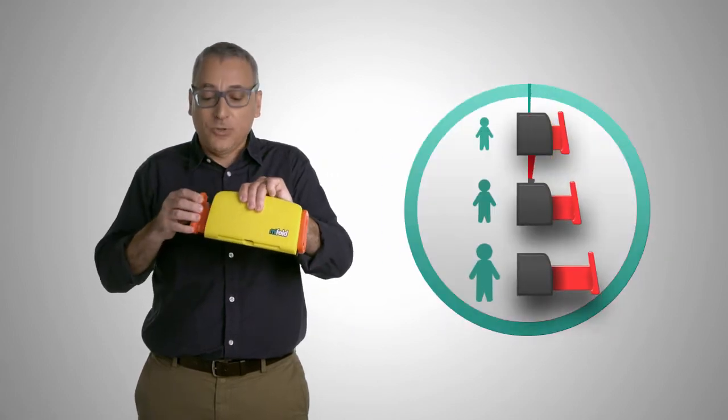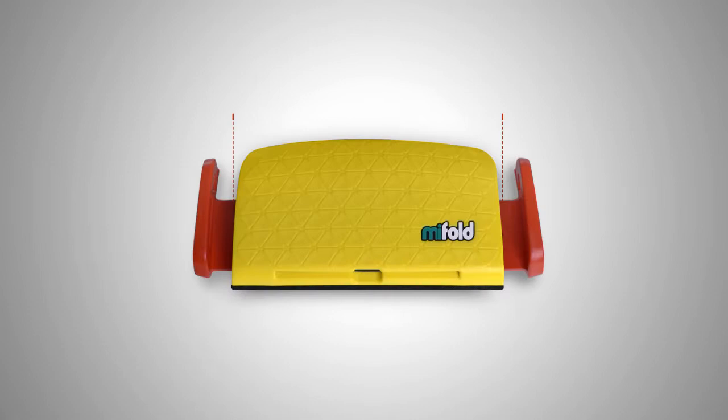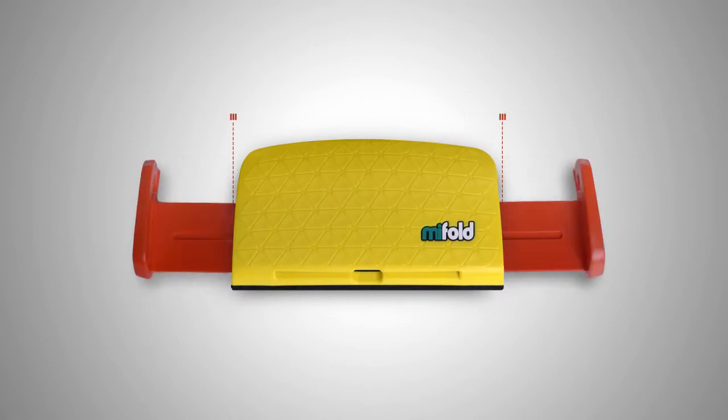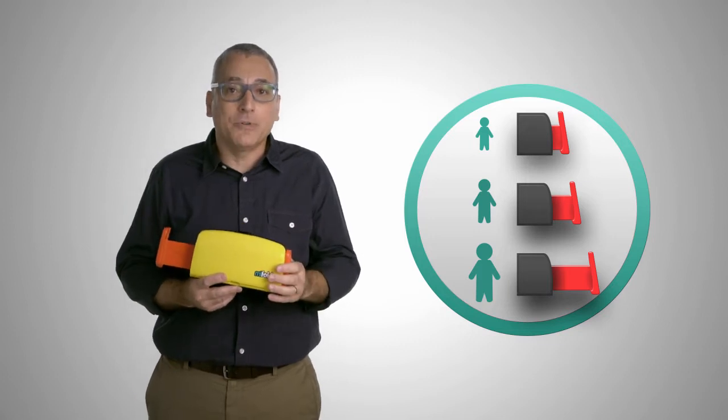The lap belt guides have four adjustment positions: one for storage and transportation, and three to adjust to the width of the child as they grow. Positions number one, two, and three on the lap belt arms can be used to quickly position the lap belt guides for repeated use.